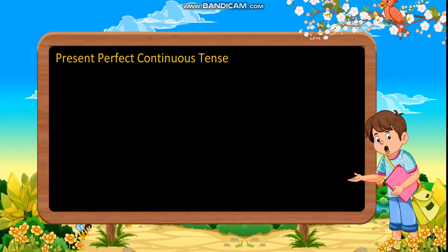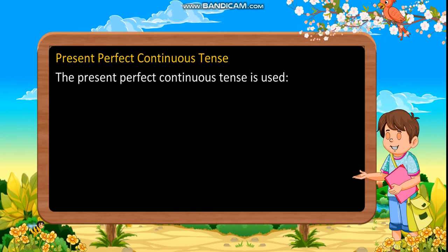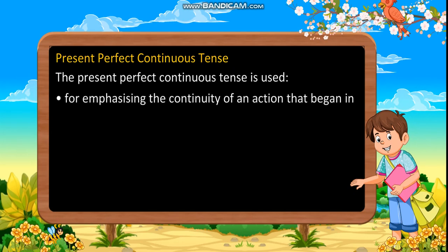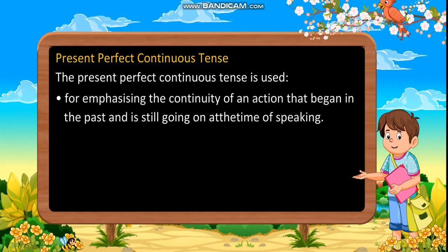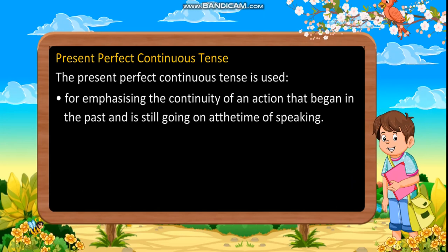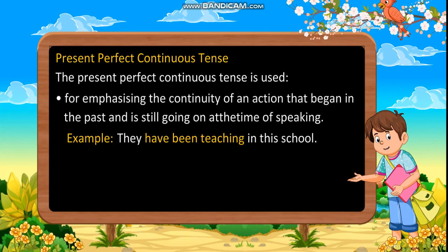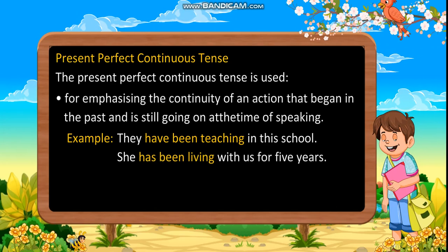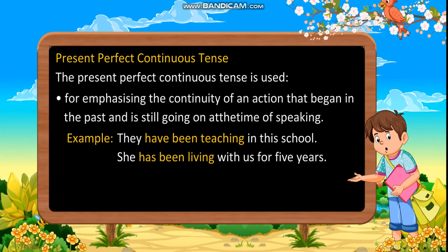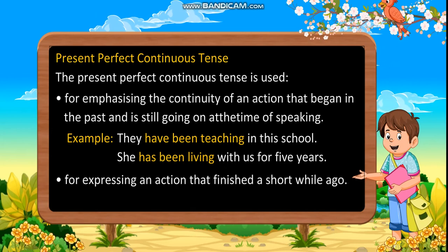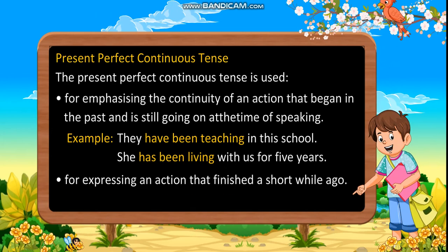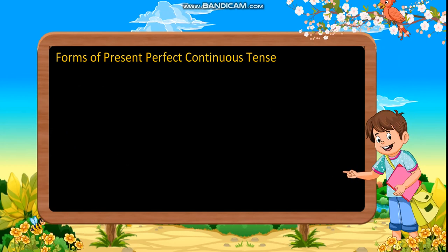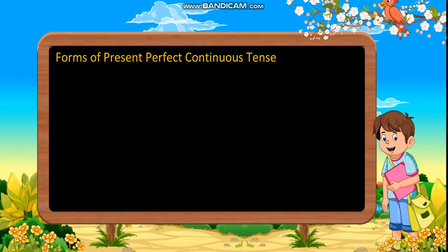Present perfect continuous tense: The present perfect continuous tense is used for emphasizing the continuity of an action that began in the past and is still going on at the time of speaking. Examples: They have been teaching in this school. She has been living with us for five years. For expressing an action that finished a short while ago. Example: They have been playing cricket since morning.